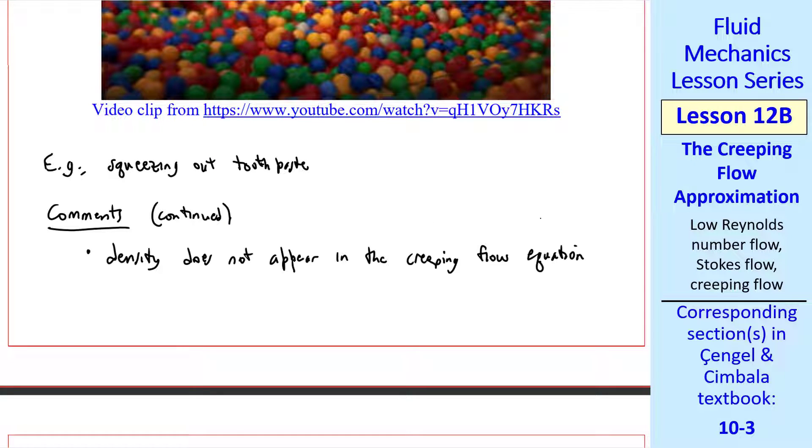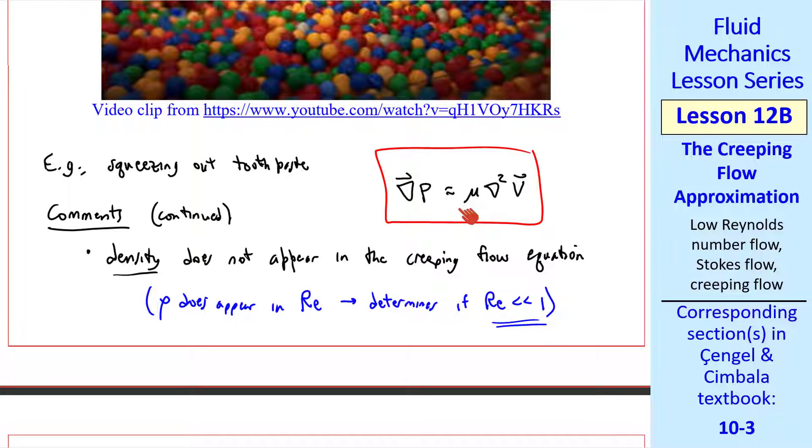Continuing our comments, density does not appear in the creeping flow equation. I repeat the equation here and notice that density has dropped out. So density is not important in solving this equation, although rho does appear in the Reynolds number, which helps to determine if the Reynolds number is very small. But once we're sure that Reynolds number is small, density has dropped out of the equation.